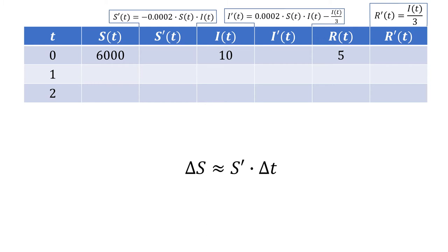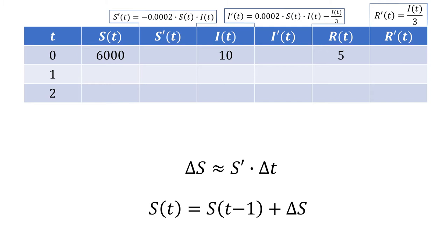Let's put our important relationships here. First, the amount of change in S can be approximated by multiplying the rate of change of S by the amount of change in time — and we could use I or R in this equation too. Second, if we want to know the number of susceptible individuals at a particular hour, we can add the change in S to the number of susceptible individuals from the previous hour.